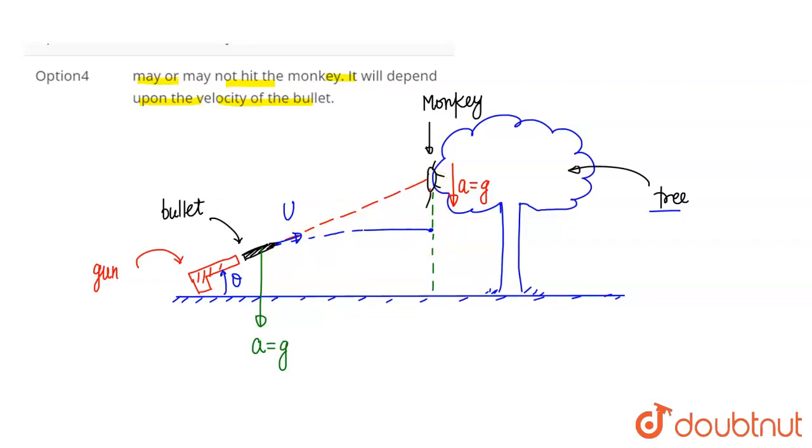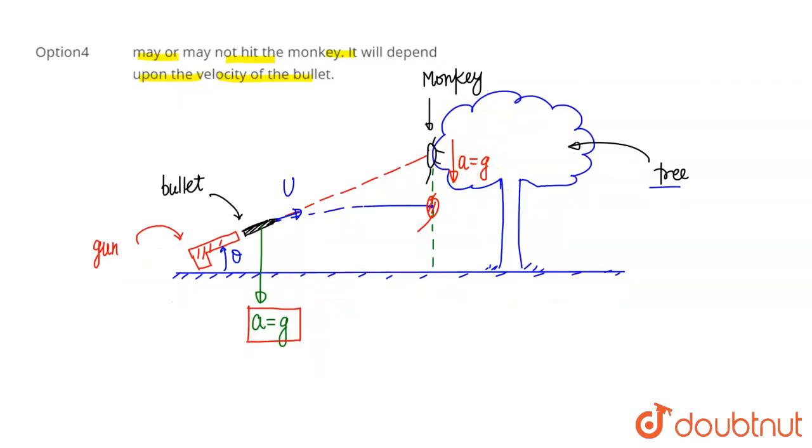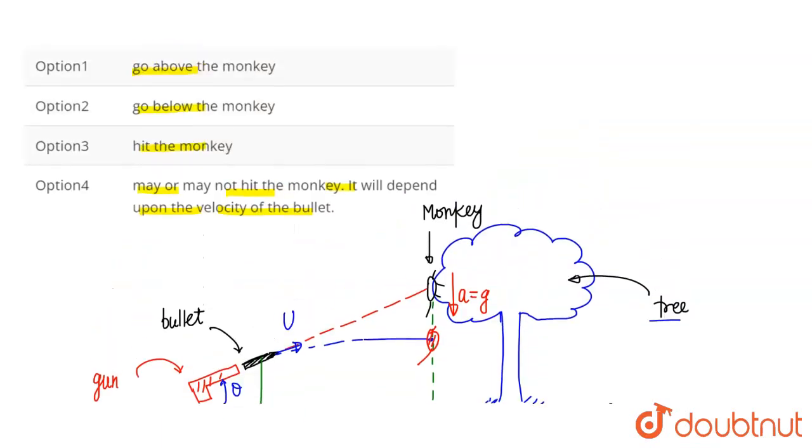So monkey's acceleration in downward direction is g. The bullet also has the same acceleration. The monkey will reach here because monkey's acceleration is g and bullet's acceleration in downward direction is also g. The bullet goes down because its acceleration is g, and the monkey goes down with acceleration g. It means acceleration of bullet and acceleration of monkey, both are the same. It means definitely this bullet will hit the monkey when the monkey does free fall in downward direction.